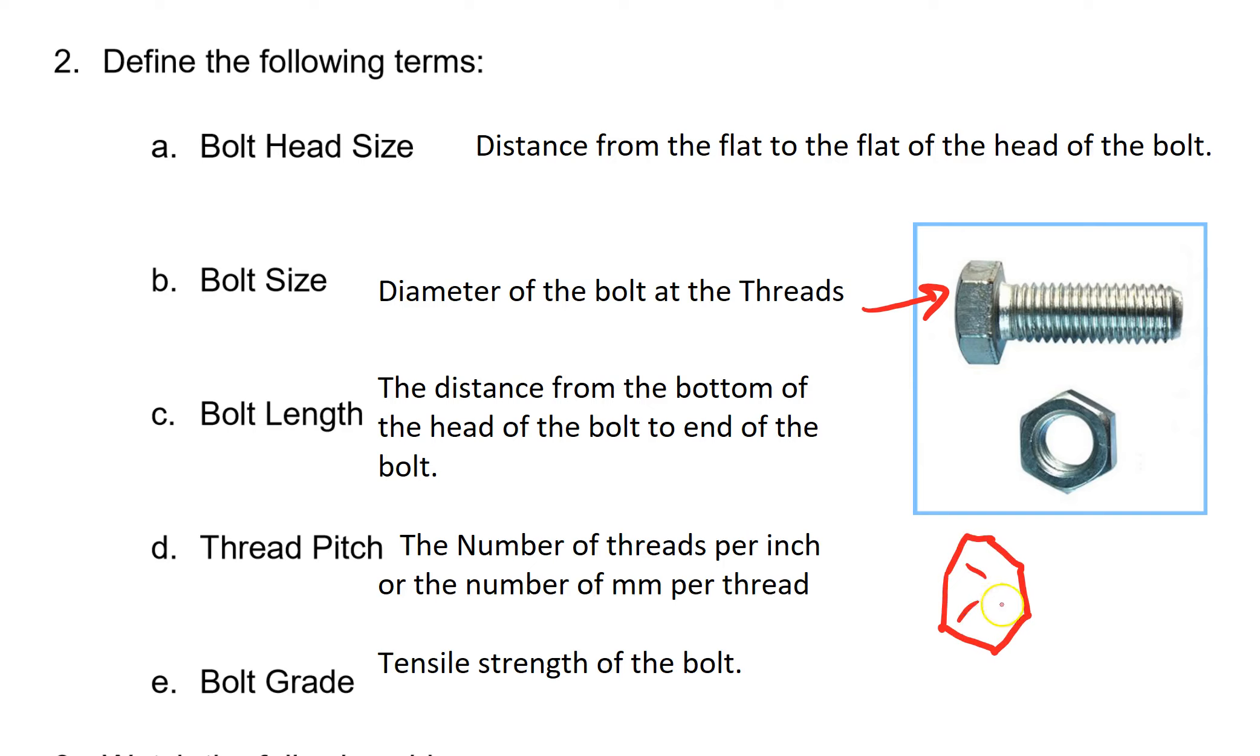And if it markings like this, then that means it's a standard bolt and you add two to the number of markings. And if there is a number like 10.9 or 9.9 or something like that, that means it's a metric. And you just write that number down.